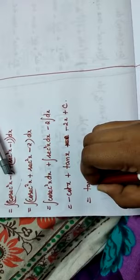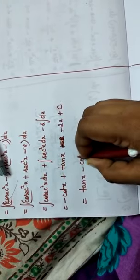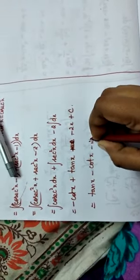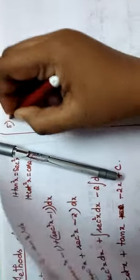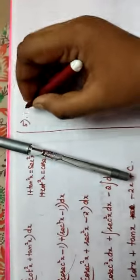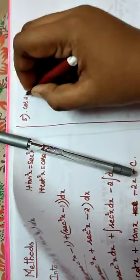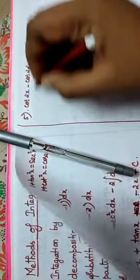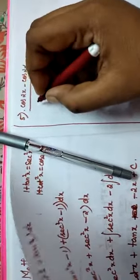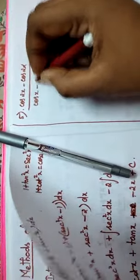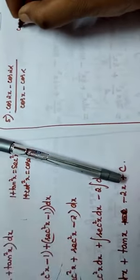So our answer is tan x minus cot x minus 2x plus c. That is the answer for our fourth problem. Now for our fifth problem: integral of cos 2x minus cos 2 alpha, divided by cos x minus cos alpha dx. We know the trigonometrical formula cos 2 theta is equal to 2 cos squared theta minus 1.